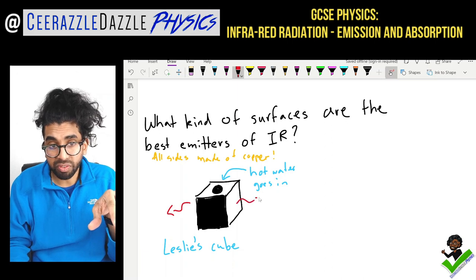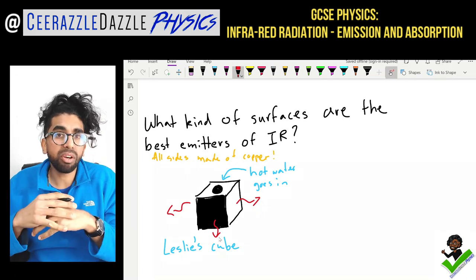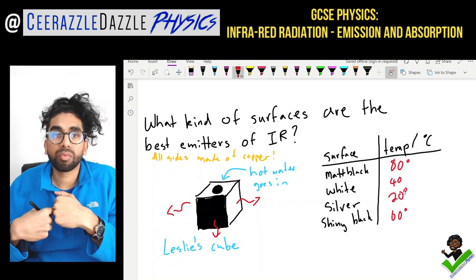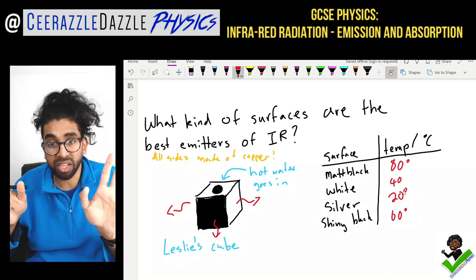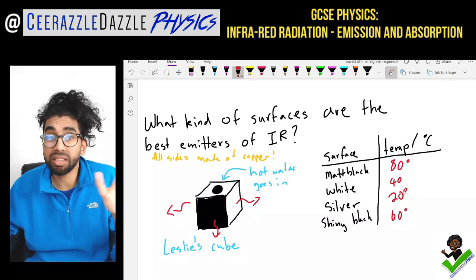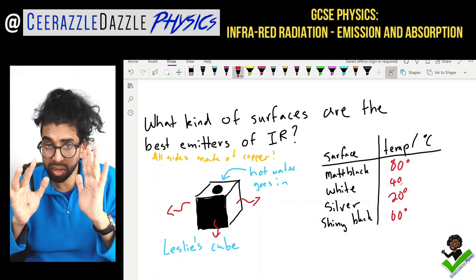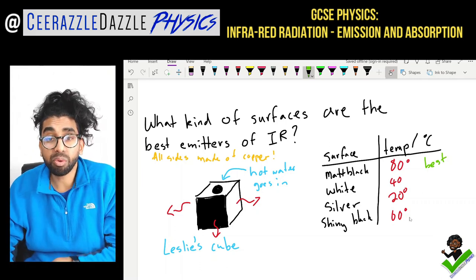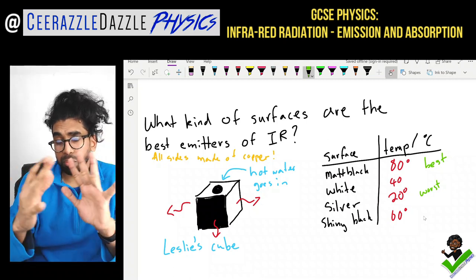We measure the temperature coming out of each side. The question is: do you think each side will emit the same amount of heat? Which one will emit the most heat energy? Looking at the table of results, we can clearly see that the matte black is the best emitter. Matte means dull. The temperature from the matte black side is the highest, and silver gives the lowest — so different surfaces emit different amounts of heat.